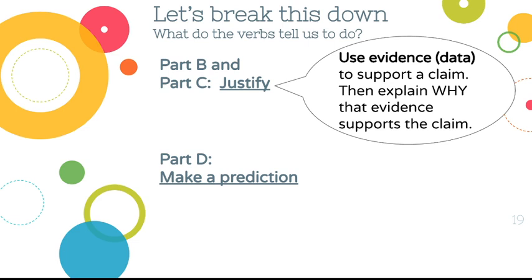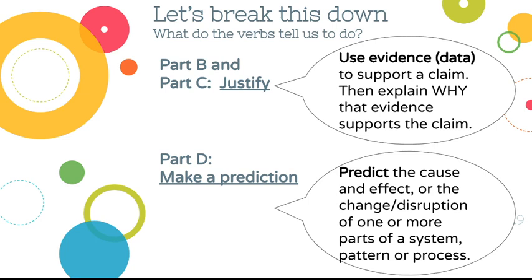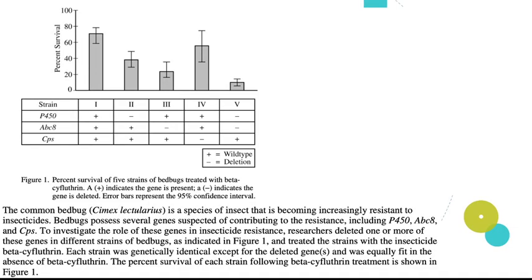Making a prediction means predicting the cause and effect of a process, or what happens if something is changed or disrupted in a system, pattern, or process. It's not asking for an explanation — just say what you think is going to happen based on logic and reasonable scientific understanding.